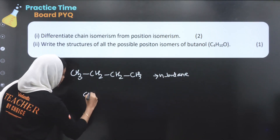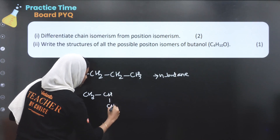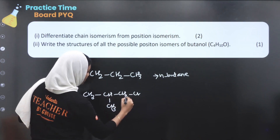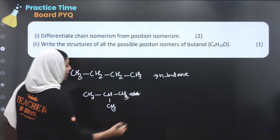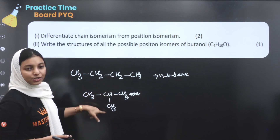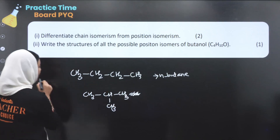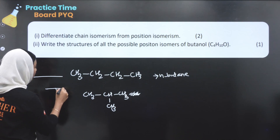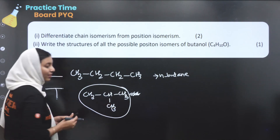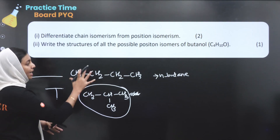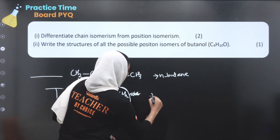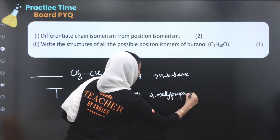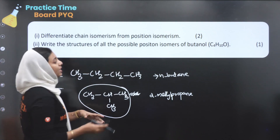Here: CH3, CH, CH3, CH2 — carbons 1, 2, 3, 4. This is what we need to do: we need to change the carbon skeleton. This is the second isomer, 2-methylpropane. This is the example of chain isomers.